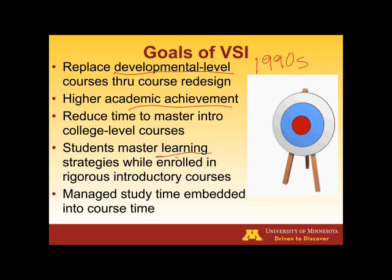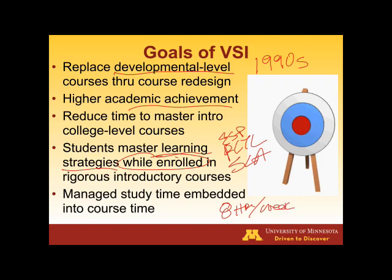Students learn to master their learning strategies while enrolled inside the course — that's also true for some other models like ESP, PL, TL, and SLA. There's a lot of time students have to allocate — eight hours on average per week for each three credit hour course in a semester system. But what we're doing is managing their study time, taking the time they normally would spend alone studying and incorporating it into working as a cohort together.